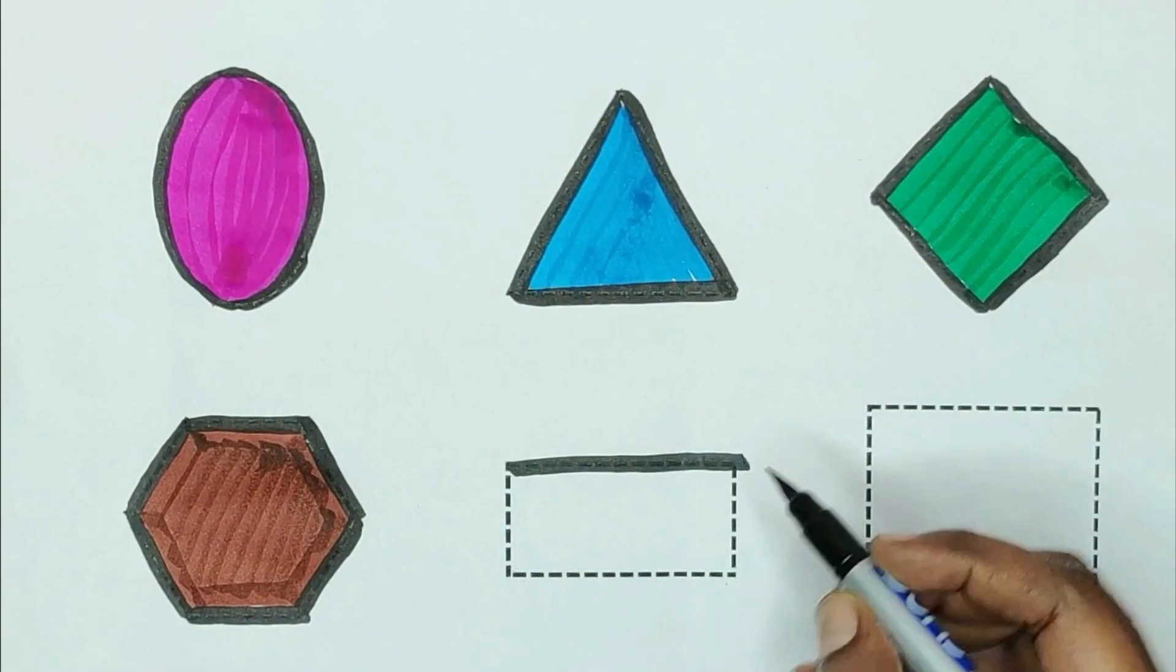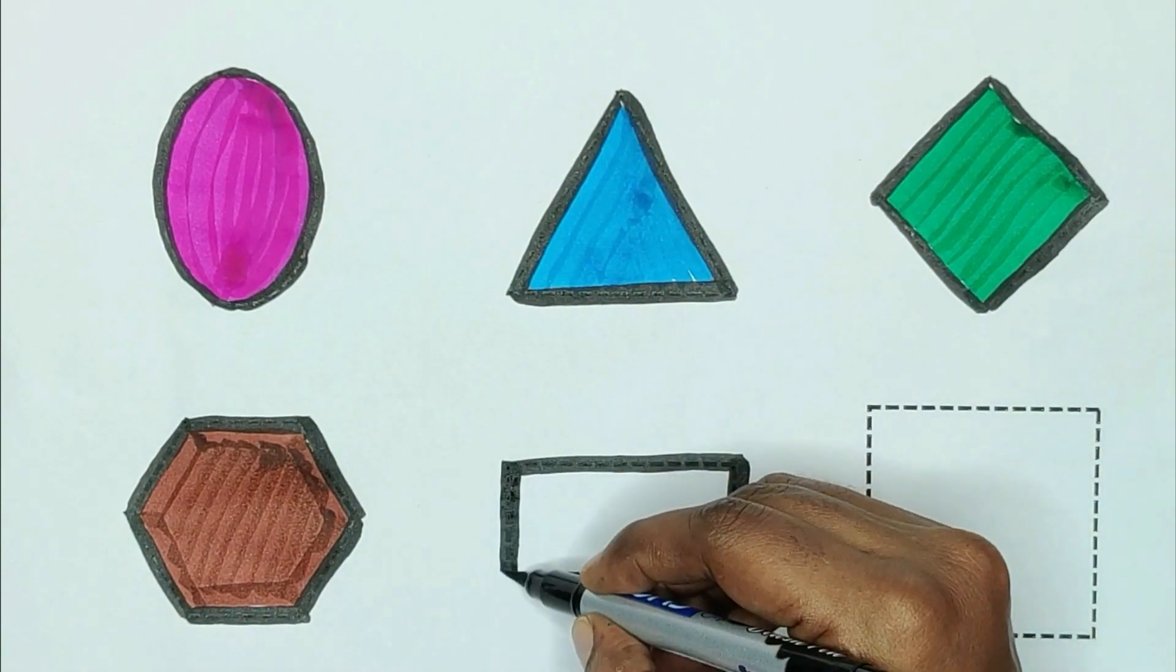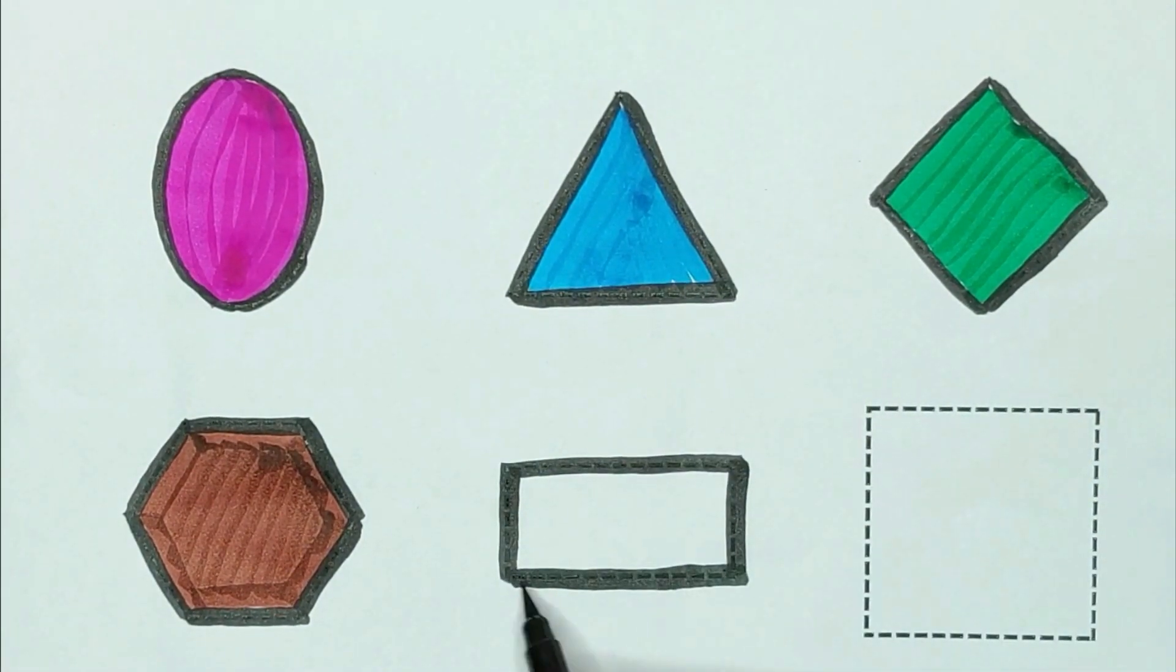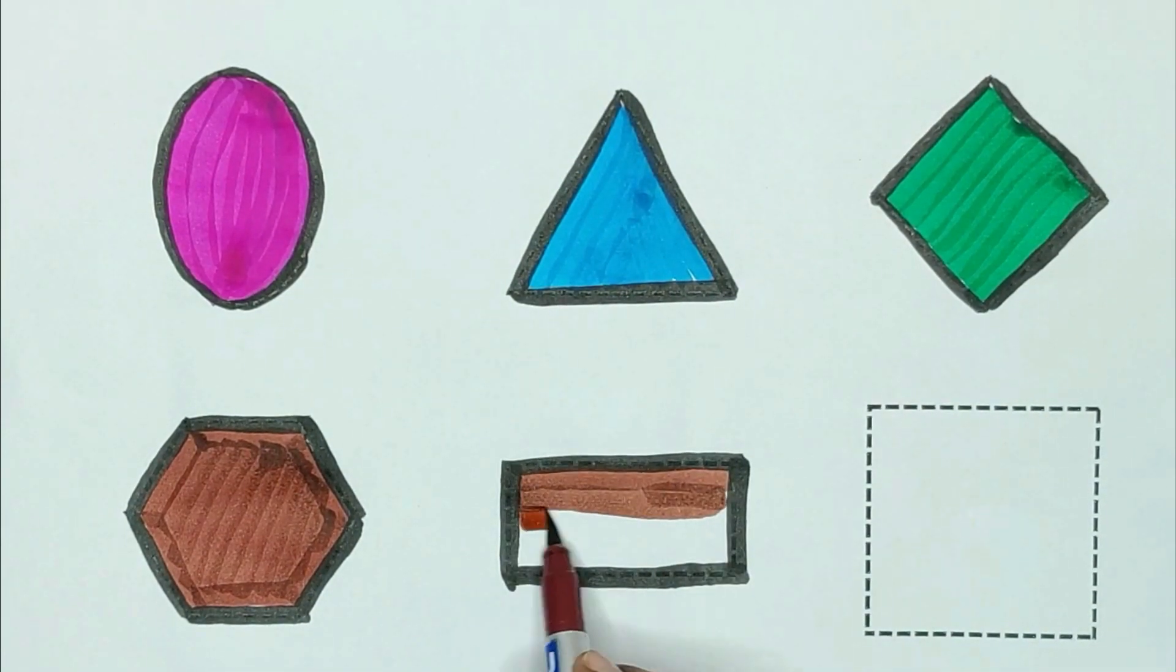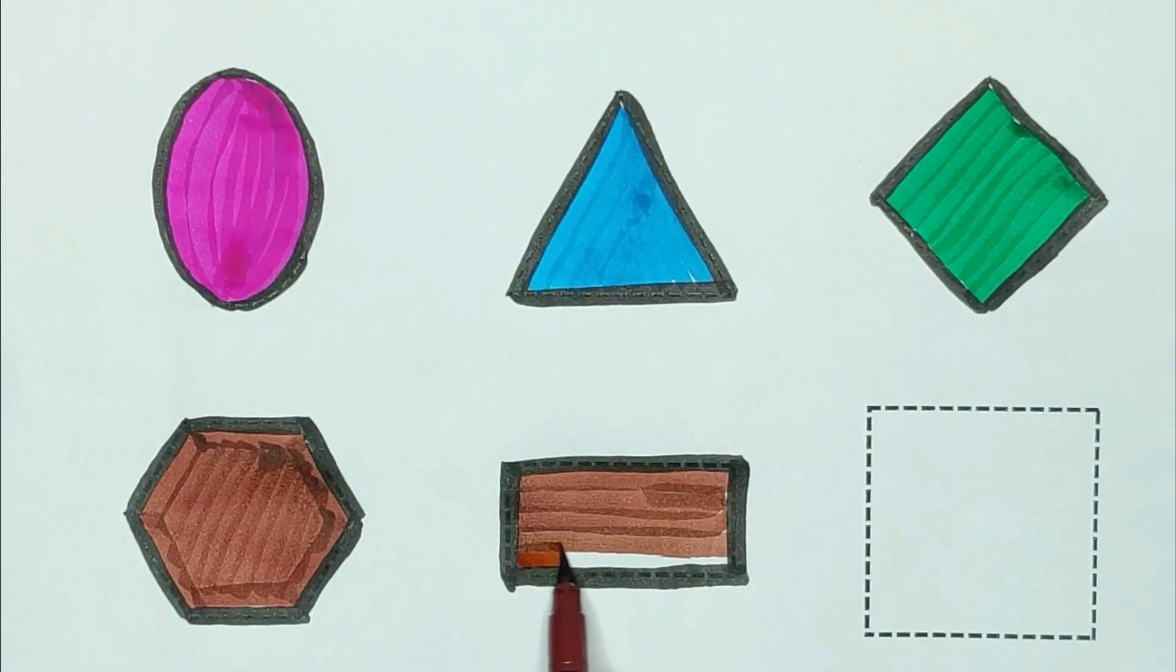Next, rectangle. The shape is rectangle. Brown color. Brown color rectangle.